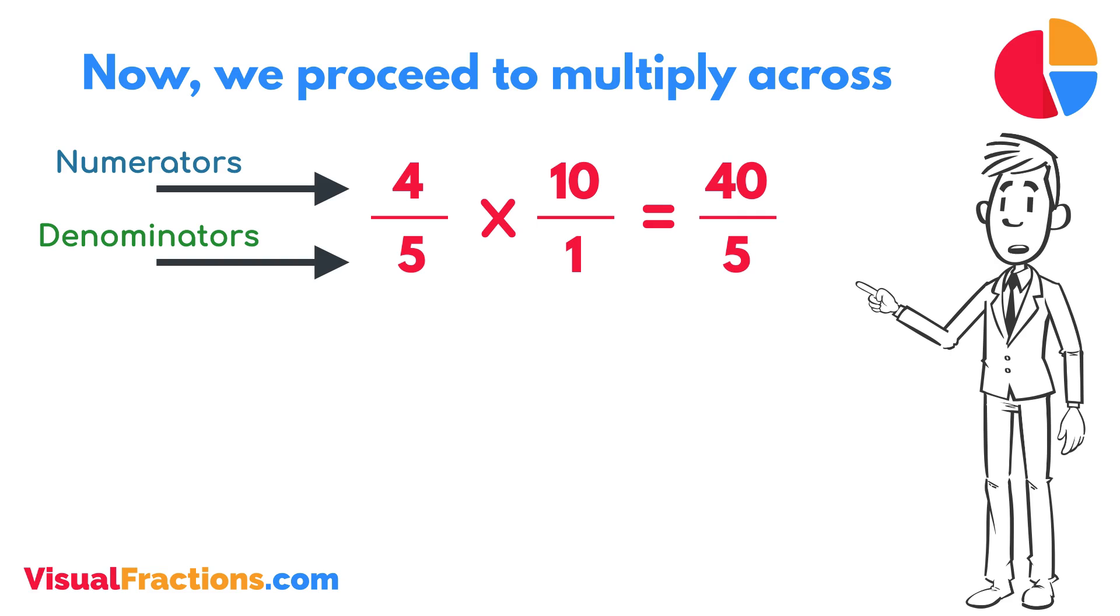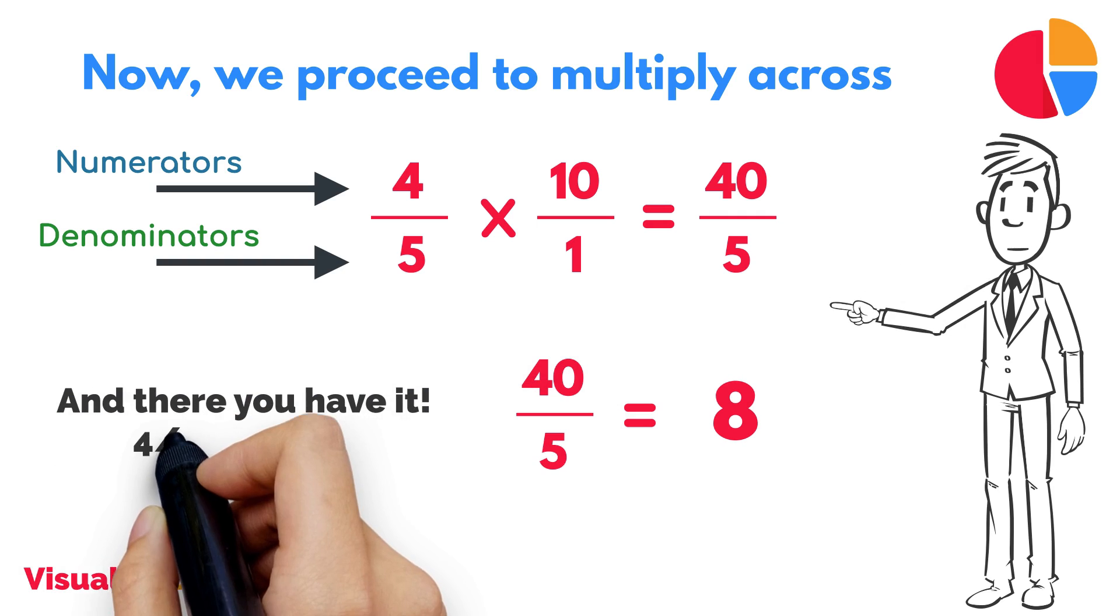We now have a new fraction, 40 fifths. To find the final answer, divide the numerator by the denominator. So, 40 divided by 5 equals 8. And there you have it, 4 fifths of 10 is 8.